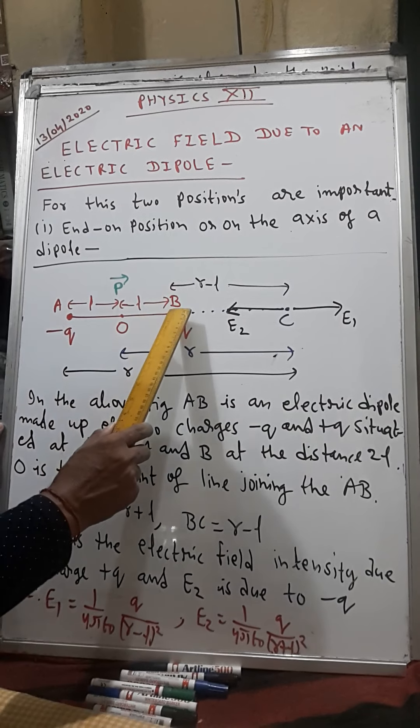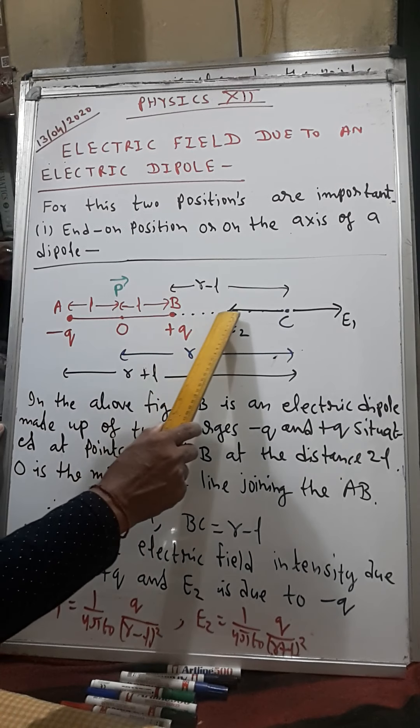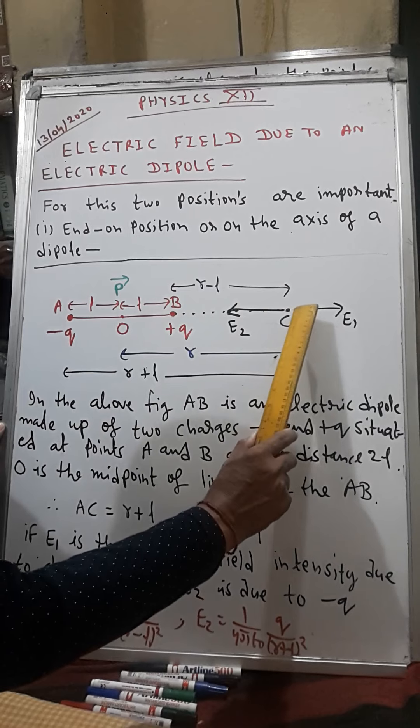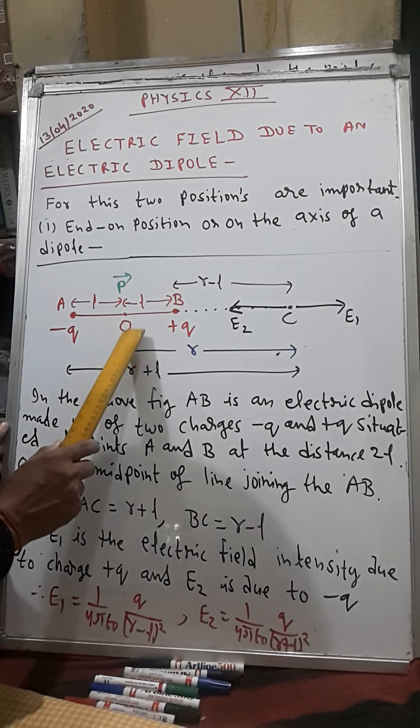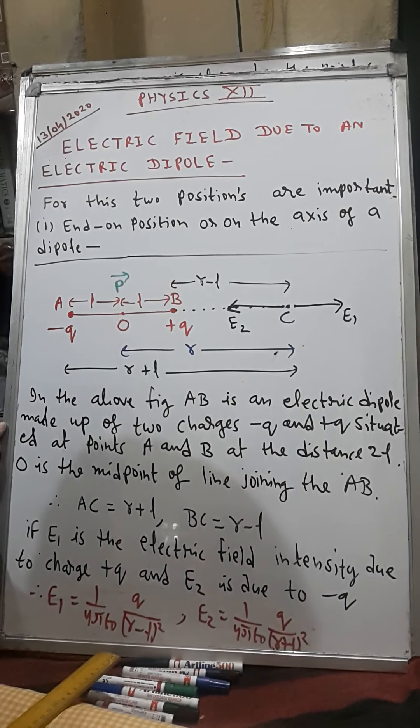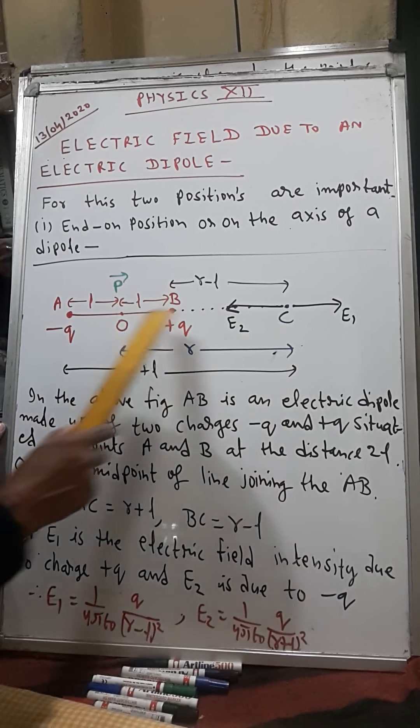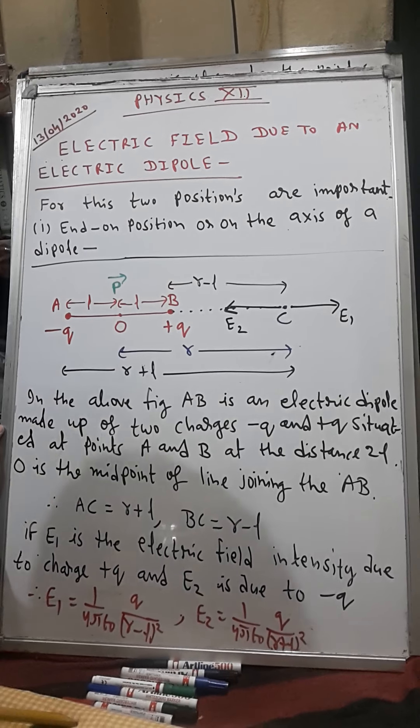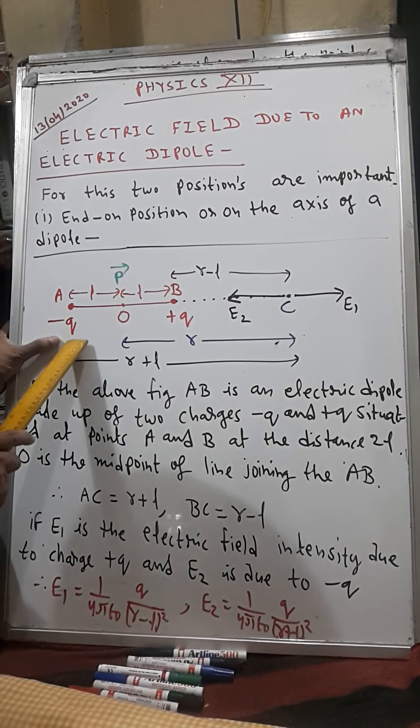End-on position means I have drawn this dotted line, and on this axis, on this line, at end-on position, I have taken point C, whose distance from point O is r. The distance of point C from the point O is r.